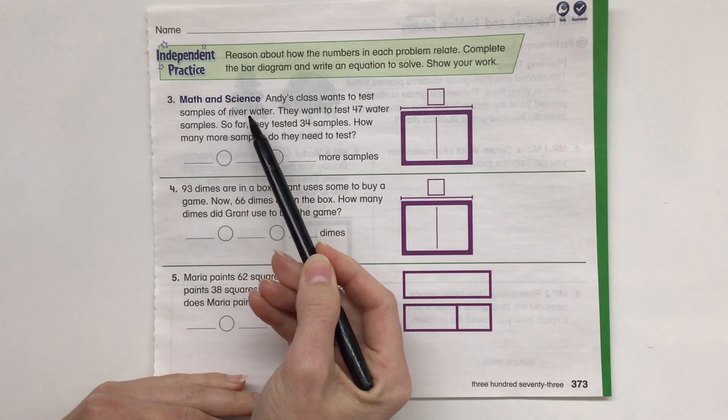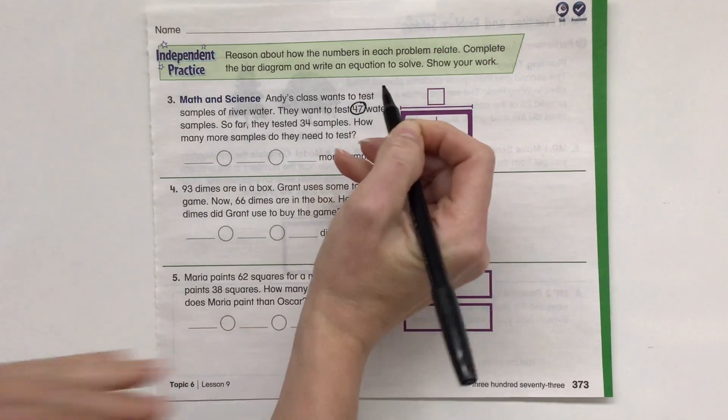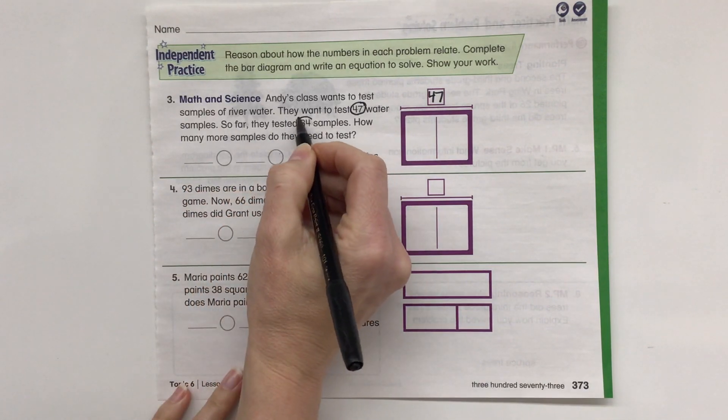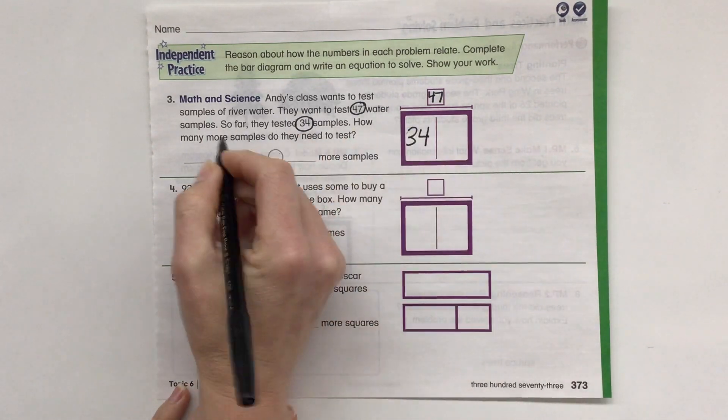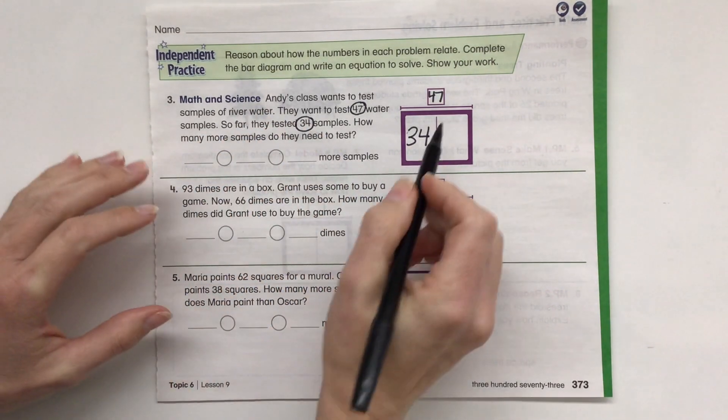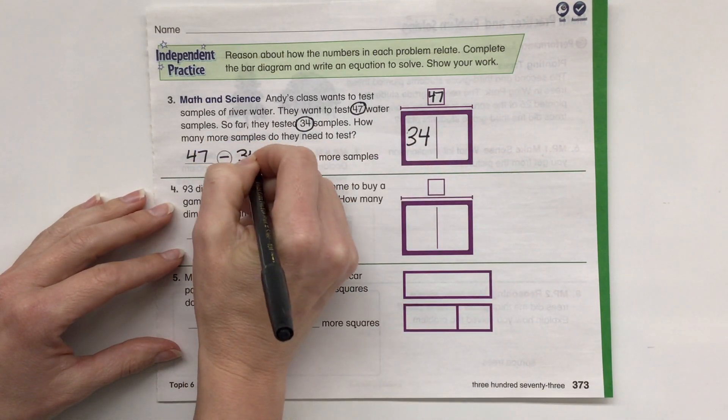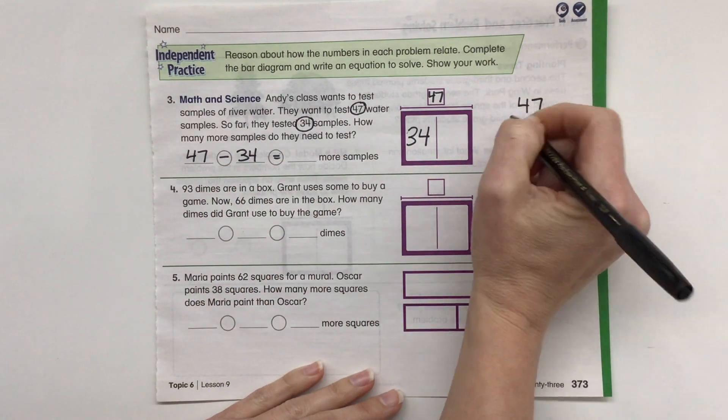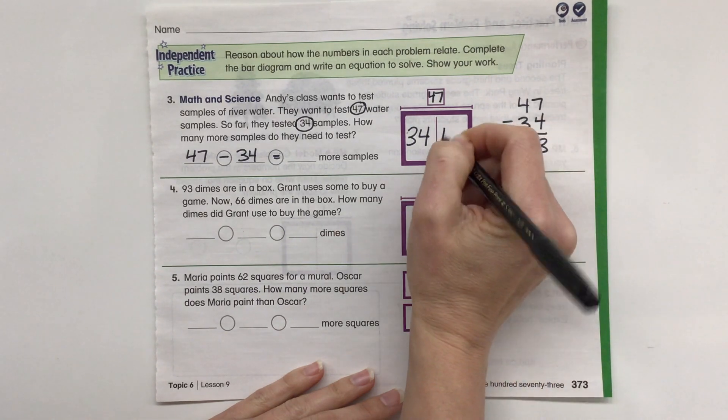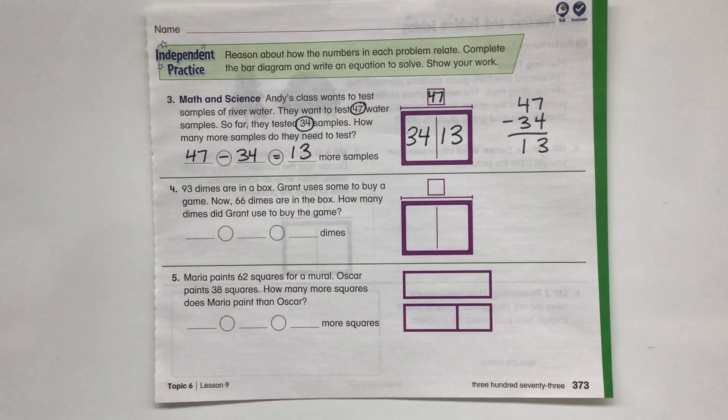Andy's class wants to test samples of river water. They want to test 47 samples. So they want a total of 47 samples of water. So far, they've tested 34 samples. How many more samples do they need to test? So we can do it a couple of different ways. I'm going to do 47 minus 34 equals. So 47 minus 34. 7 minus 4 is 3, 4 minus 3 is 1. So we know they need to test 13 more samples.